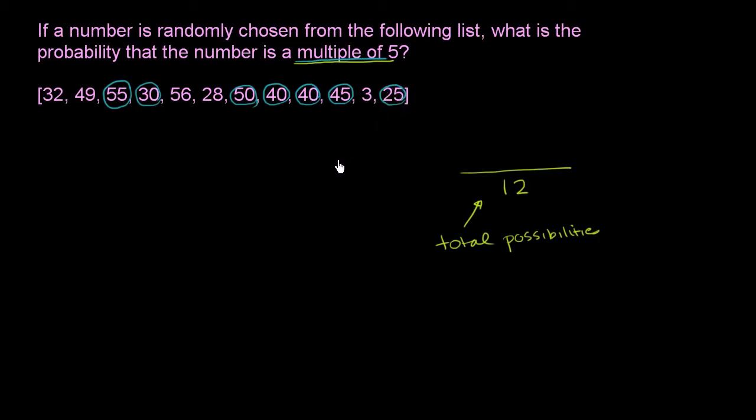So I've circled all of the multiples of 5. So of all the possibilities, the ones that meet our constraint of being a multiple of 5, there are 1, 2, 3, 4, 5, 6, 7 possibilities. So 7 meet our constraint.